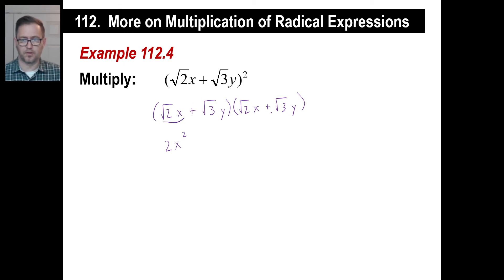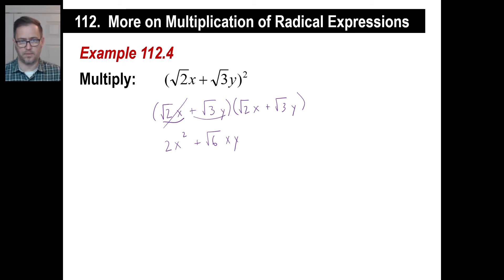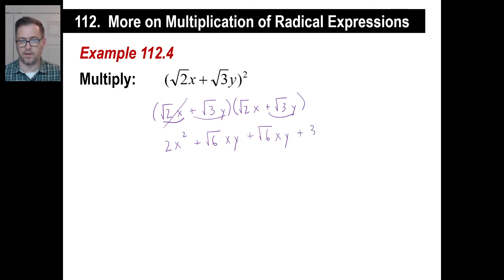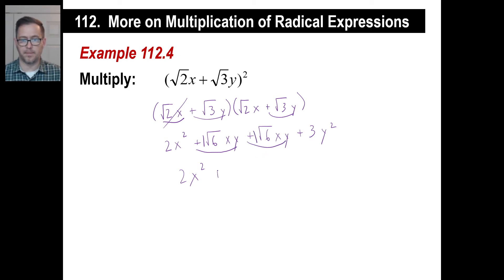Now let's take the first term and multiply by the second. The square root of 2 times the square root of 3 is the square root of 6, and x times y is just xy. Then taking the second binomial's first term times the first: the square root of 3y times the square root of 2x — that's the same term we just got. So we double up on that: another square root of 6 times xy. Then the square root of 3 times the square root of 3 is the square root of 9, which is 3, and y times y is y squared.